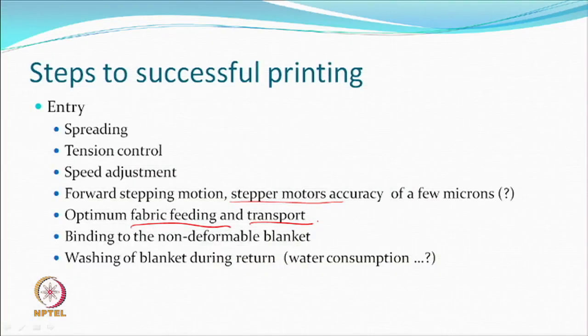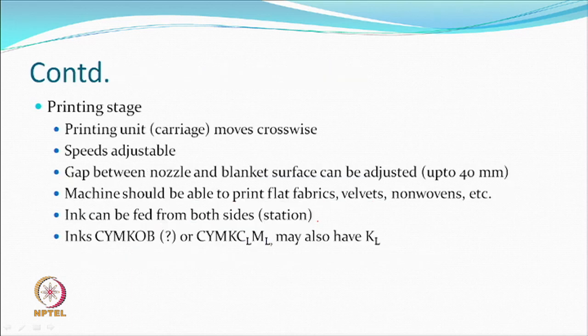Digital inkjet printing for fabric is complex from a technology standpoint and from the requirements involved. In the print unit, you have a carriage that can contain many print heads, possibly one or two rows, with adjustable speeds.